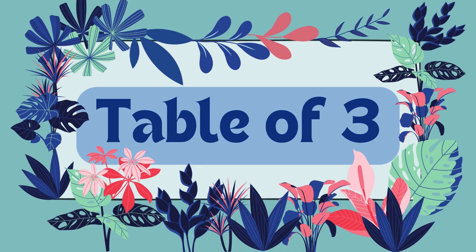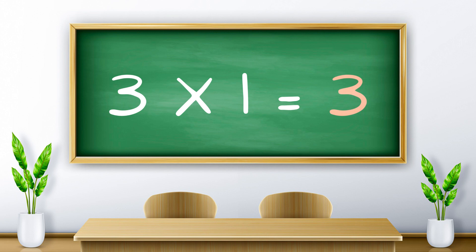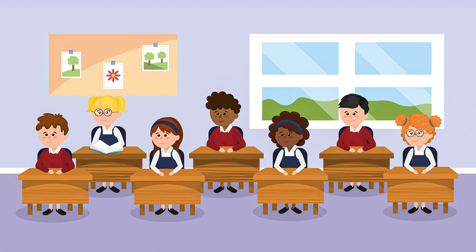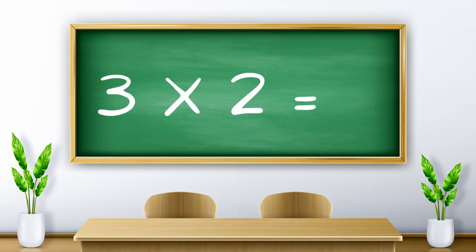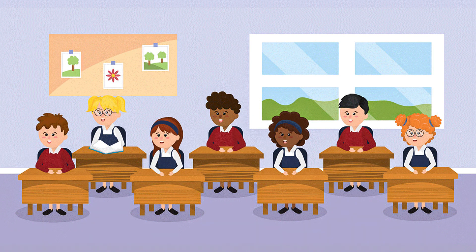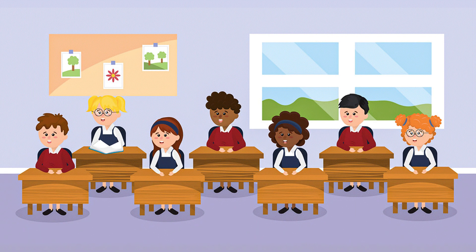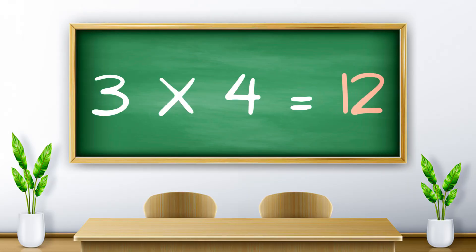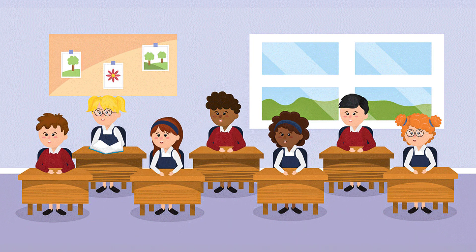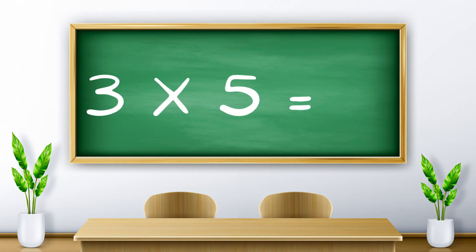Table of three. Three ones are three. Three twos are six. Three threes are nine. Three fours are twelve.